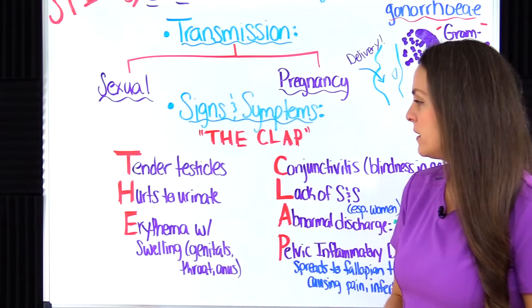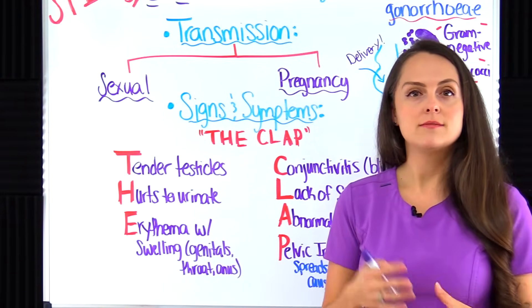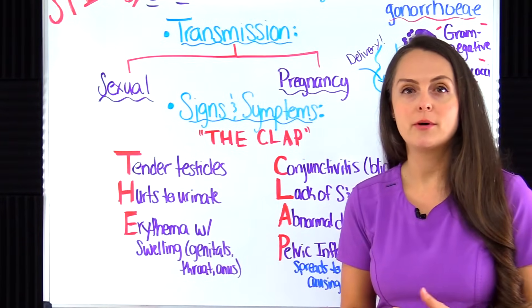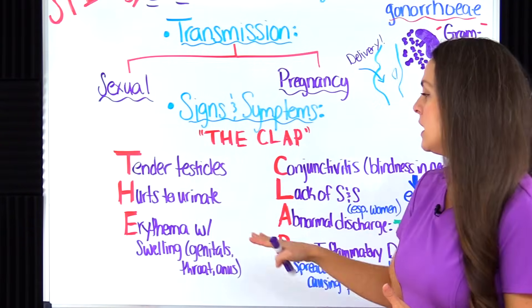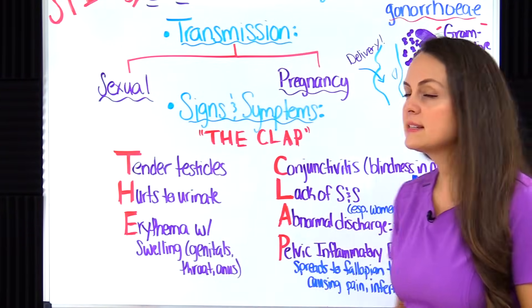E stands for erythema with swelling. This affects whatever organ or area of the body that got infected with gonorrhea — it could be the genitals, the throat, or the anus.